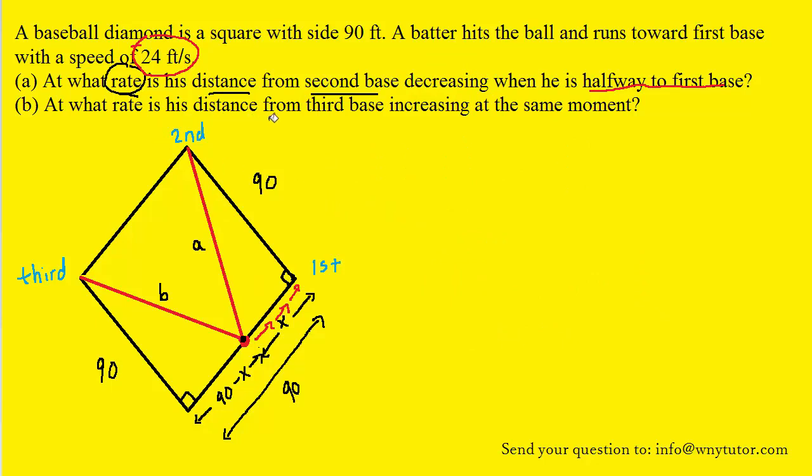Now on to part B, which asks, at what rate is the distance from the runner to third base increasing at the same moment? Now third base is over here, and what we can do is actually work with the other triangle in the diagram. We're going to use Pythagorean theorem once again. We're going to have (90-x)² + 90² = b².